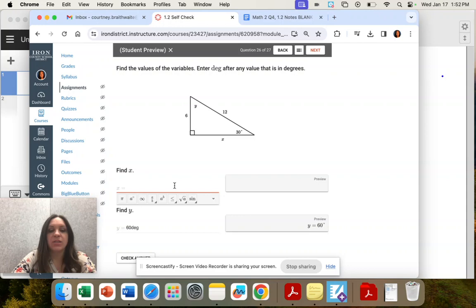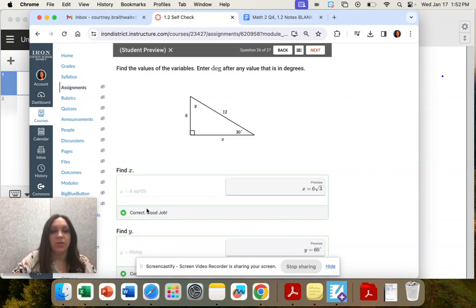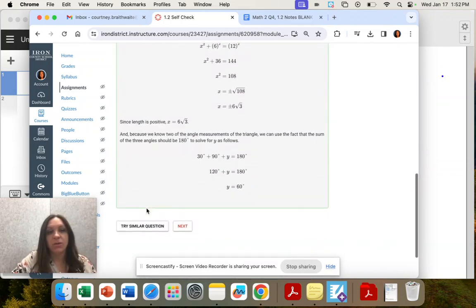Let's see if it counts that. It might, I am thinking it might want the decimal version. No, it counted as 6 square roots of 3.